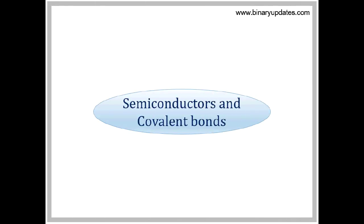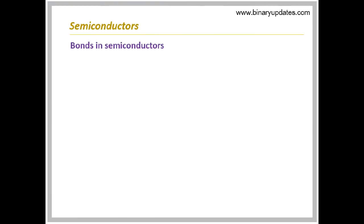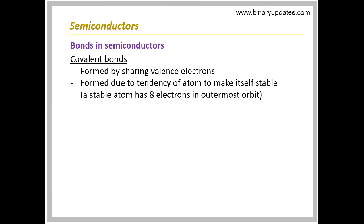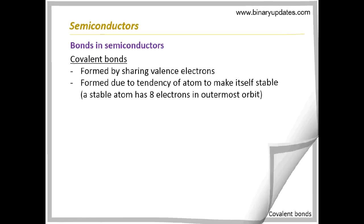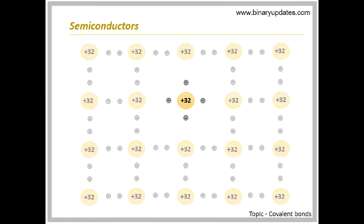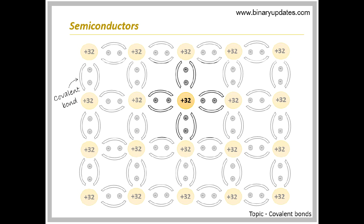Semiconductors and covalent bonds. Before going into the structure of semiconductor material, let us see one important concept called the covalent bond. The reason behind bonding is to become stable. An atom has a tendency to have eight valence electrons in its outermost orbit. This forces the atom to share electrons with other atoms by forming a bond called a covalent bond. Each germanium atom has four valence electrons and requires another four to become stable. These required four electrons are shared by neighboring atoms, and this sharing is done by other atoms as well, forming a covalent bond.